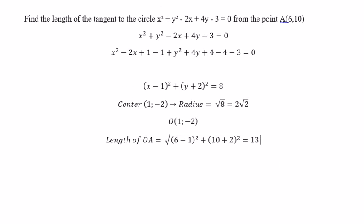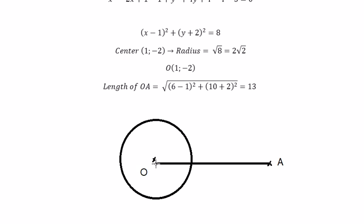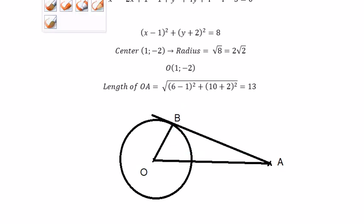Now I will use this information to draw the circle and the tangent. We have the circle, the center O inside, and the point A outside. The tangent from A touches the circle at a point I will call B. We know that angle OBA should be 90 degrees.